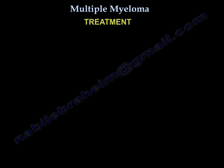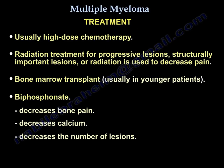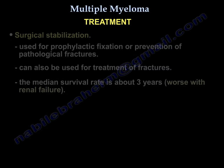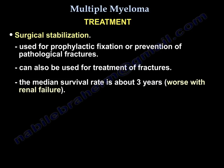Treatment includes high-dose chemotherapy and radiation for progressive, structurally important lesions or for pain relief. Bone marrow transplant is another option. Bisphosphonates decrease bone pain, calcium levels, and number of lesions. Surgical stabilization is used for prophylactic fixation, prevention of pathological fracture, or actual fractures. Median survival is about three years, worse with renal failure.